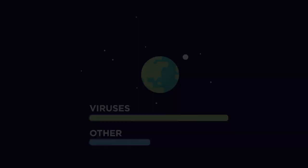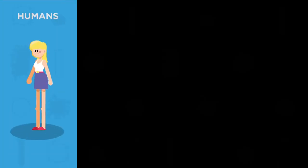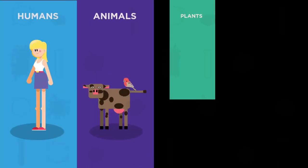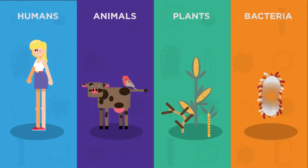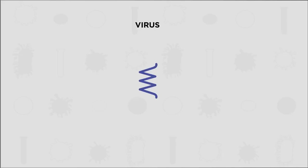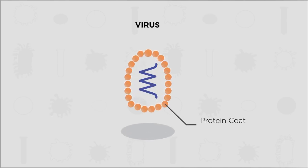Viruses can infect humans or animals, plants, and even bacteria. Viruses are very simple. They are made up of a protein coat surrounding a strand of genetic material. The genetic material can either be DNA or RNA.